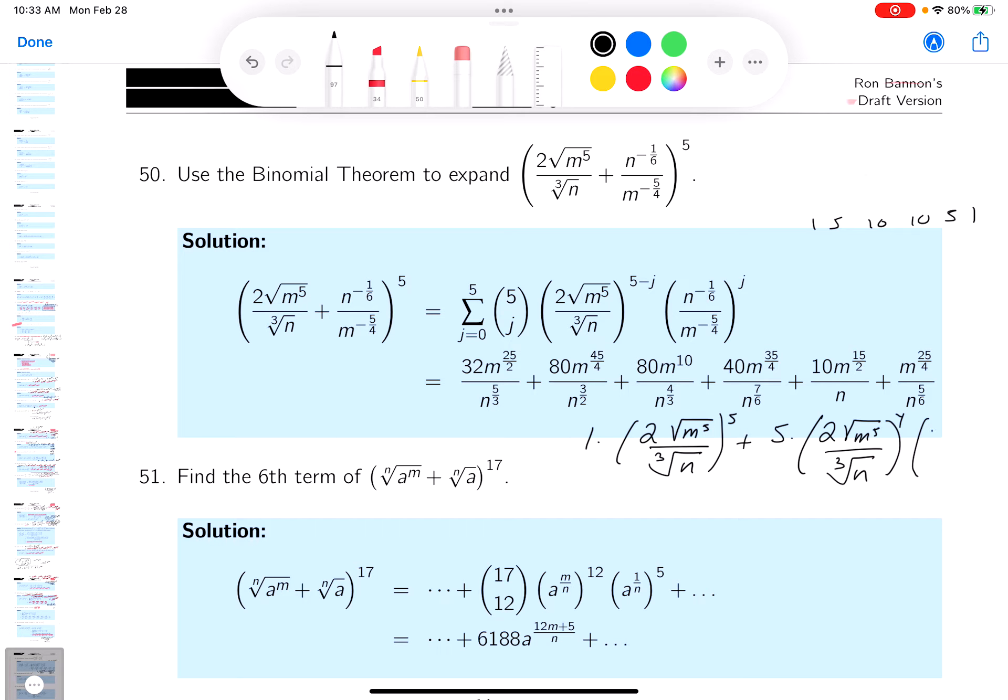But now I have one factor of this nightmare, n to the minus 6, 1/6, I mean, over m to the minus 5 quarters.